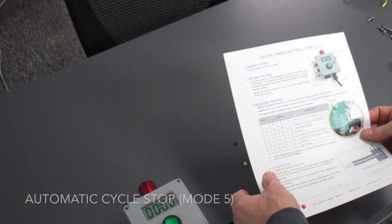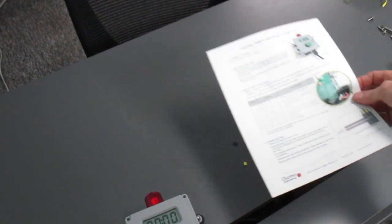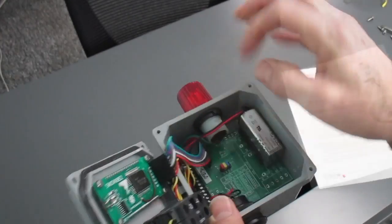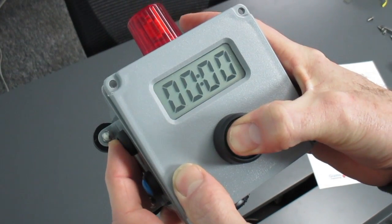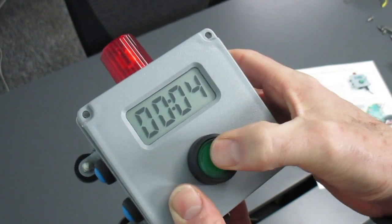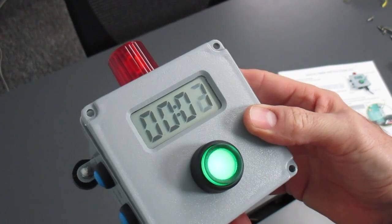And finally I'm going to demonstrate the automatic cycle stop. For that we want jumper D off of the pins. So now we're going to set it for a short time, maybe four seconds. So now when we get to the end of the cycle it will stop automatically without any intervention.